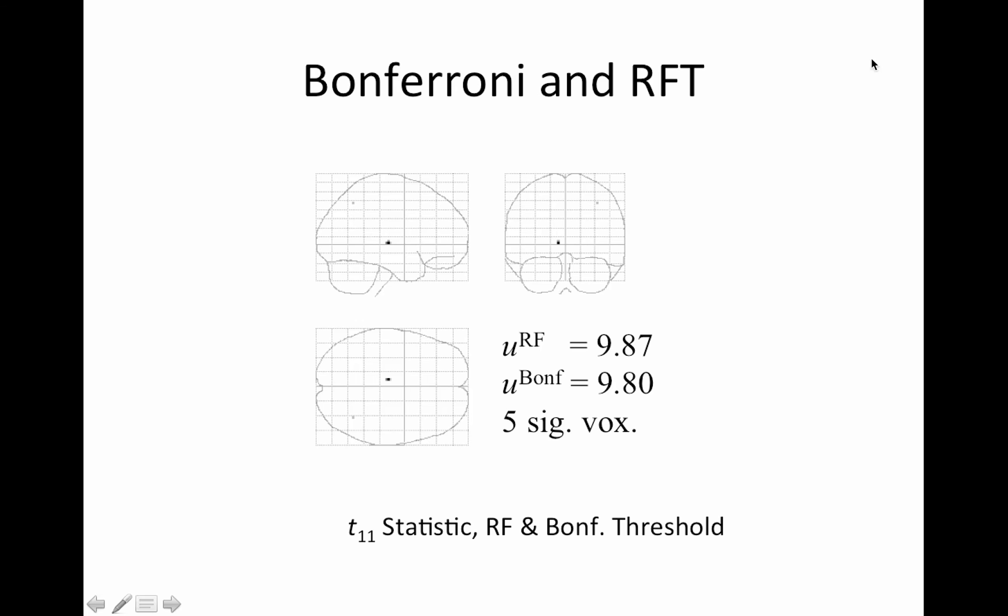Again, this is voxel-wise, our random field theory, and it does really horribly. And this example, this is a glass brain. This is what SPM does. It's a really confusing view because it's as if the brain was glass. So this looks like it's, I don't know where this looks like to you, but you have to kind of look at all three of these together to figure out the placement.